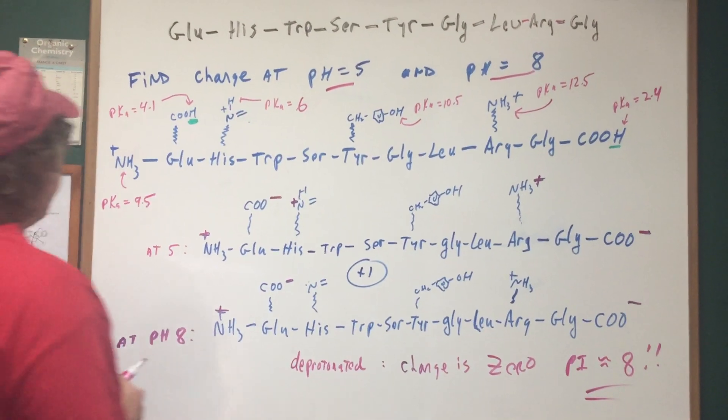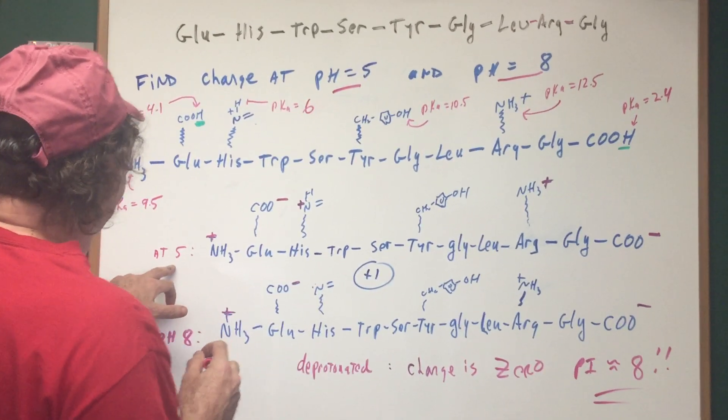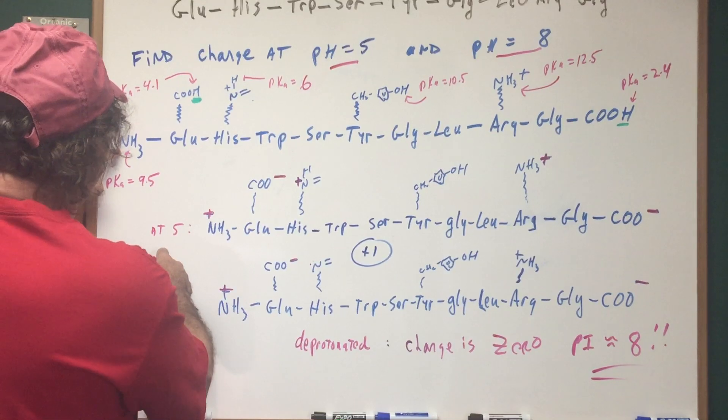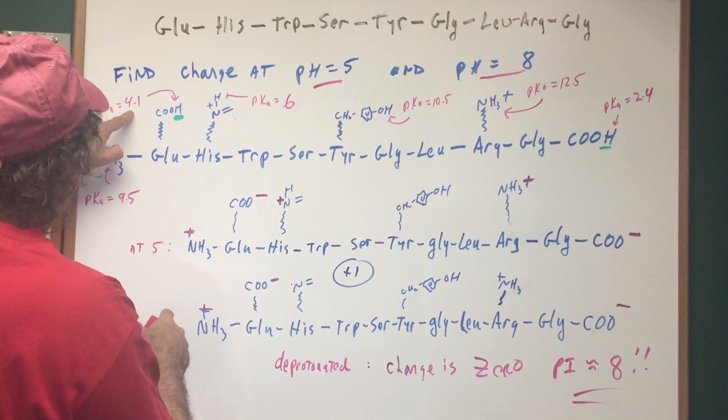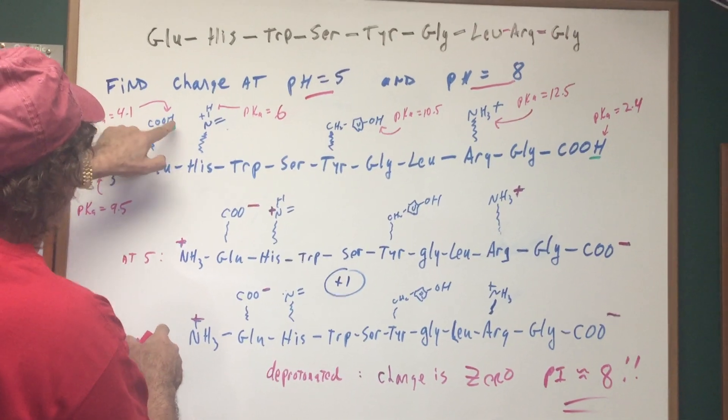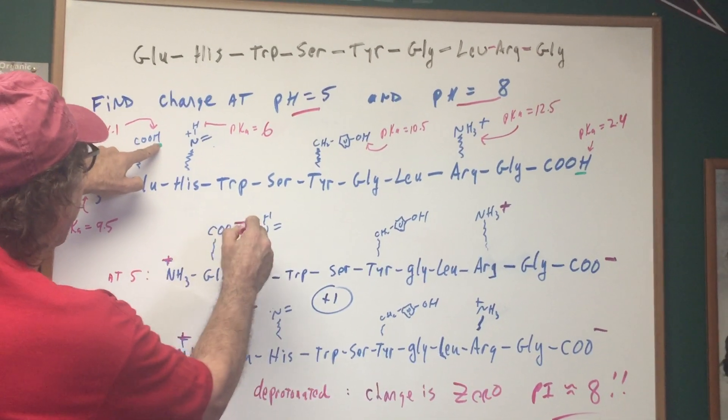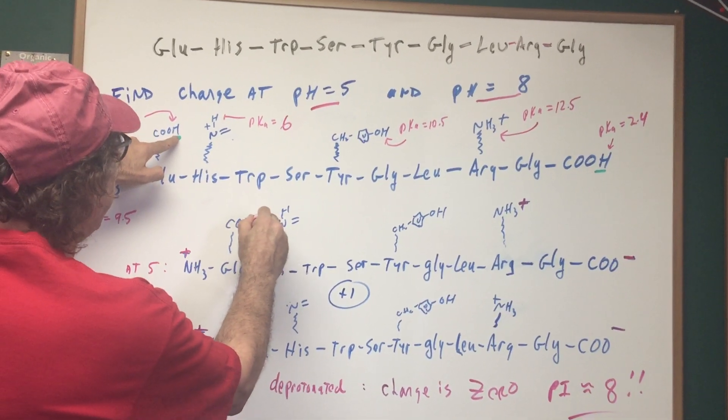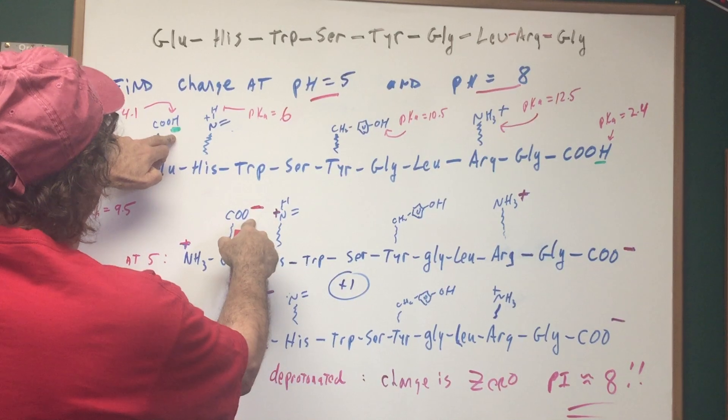So if we go to here now, we go to a pH of first five. Well, first of all, nothing is happening here till 9.5. So as you can see, at 4.1 is when we lose 50% of these. So if you're at five, you've deprotonated them. So we have COO minus.